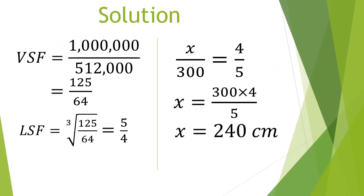Solution: volume scale factor is 1,000,000 over 512,000. This simplifies to 125 over 64. Linear scale factor is cube root of 125 over 64, and that gives us 5 over 4. X over 300 is equivalent to 4 over 5. X is 300 multiplied by 4 over 5. So our answer is 240 cm.